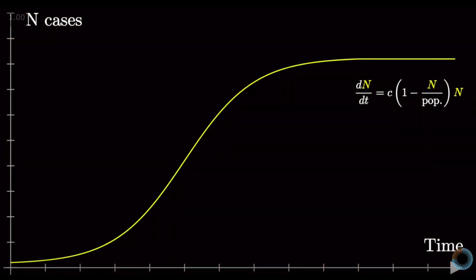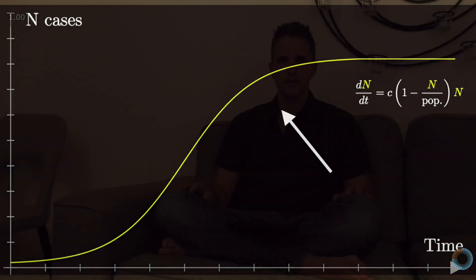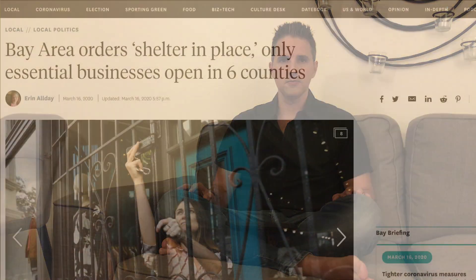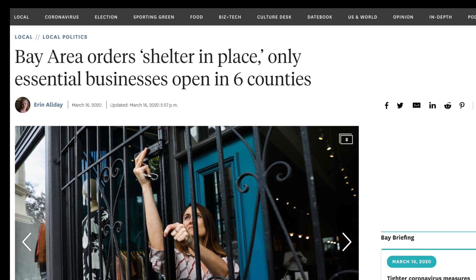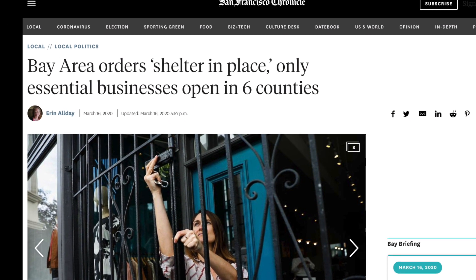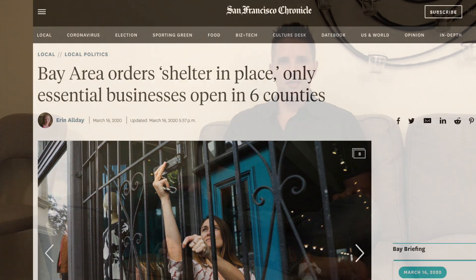Many people have now become familiar with the S-curve. Grant Sanderson did a great job of explaining it — he's 3Blue1Brown. The S-curve comes from a differential equation that dictates exponential growth initially and then leveling off as the population becomes infected with the virus. Many politicians are now talking about flattening the curve and have suggested social distancing. In my area they're now enforcing shelter-in-place, meaning we should stay in our homes unless necessary to go out, in an effort to stop interactions among people and prevent the virus from transmitting.